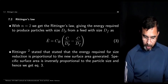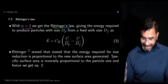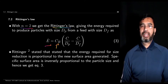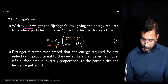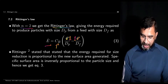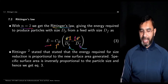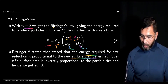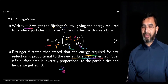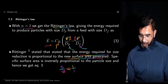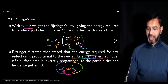So putting n equals 2 and integrating, Ẽ becomes c_R times (1/d_P minus 1/d_F), where d_P is the size of the product and d_F is the size of the feed. Rittinger's law was based on the idea that the energy required for size reduction is proportional to the new surface area generated. We know that the specific surface area of a particle — surface area per unit volume — is proportional to 1/d per particle.